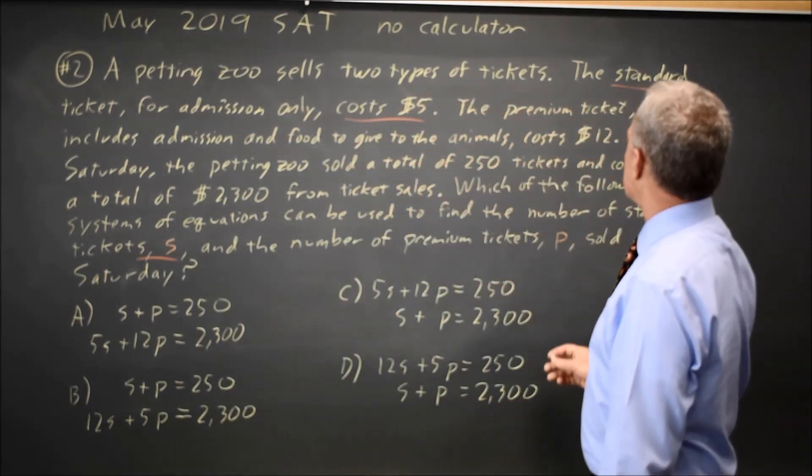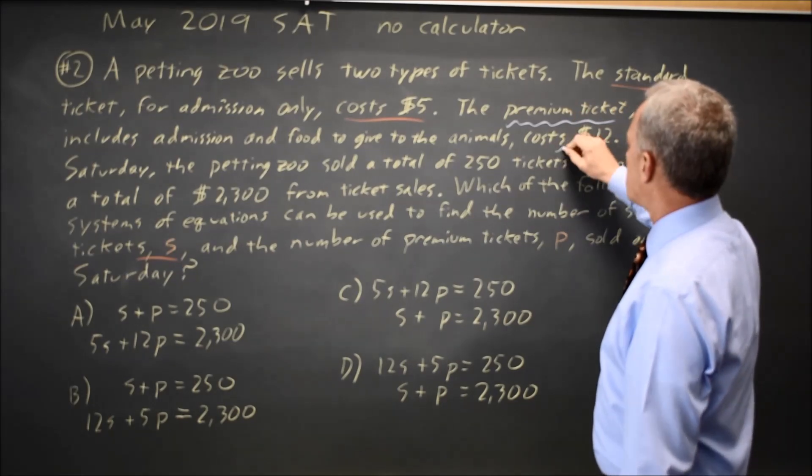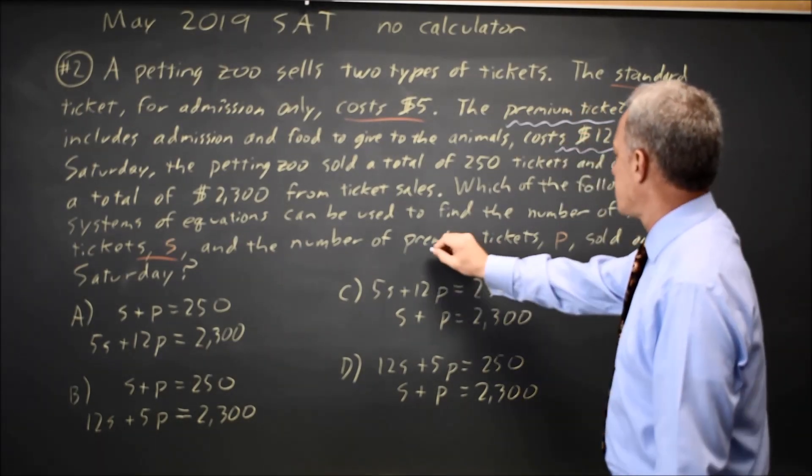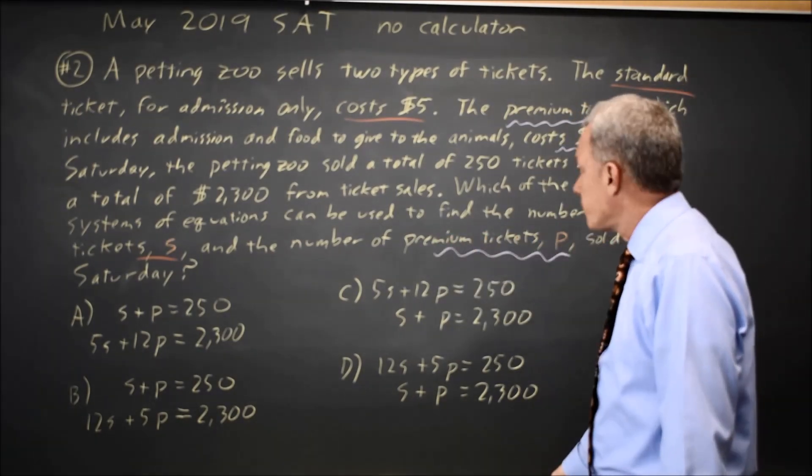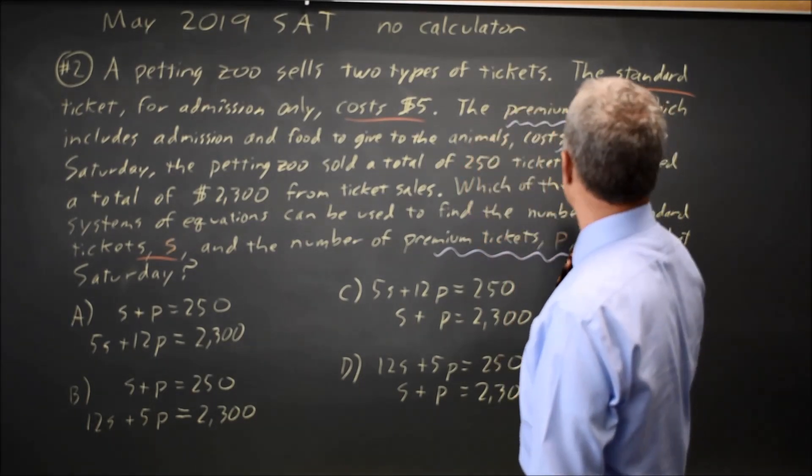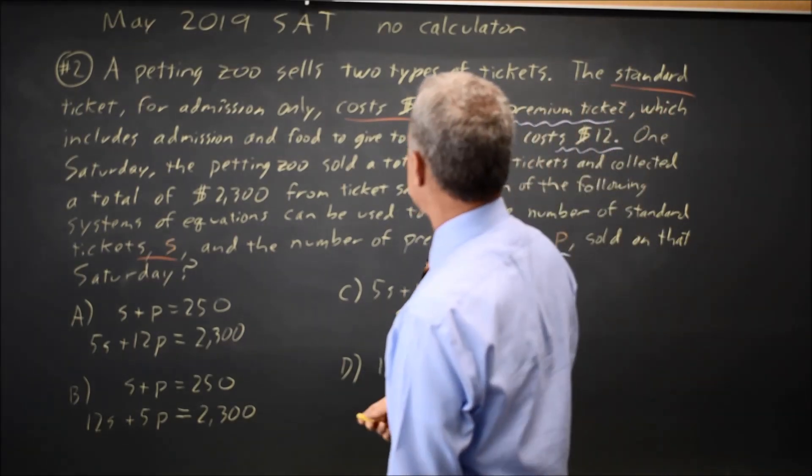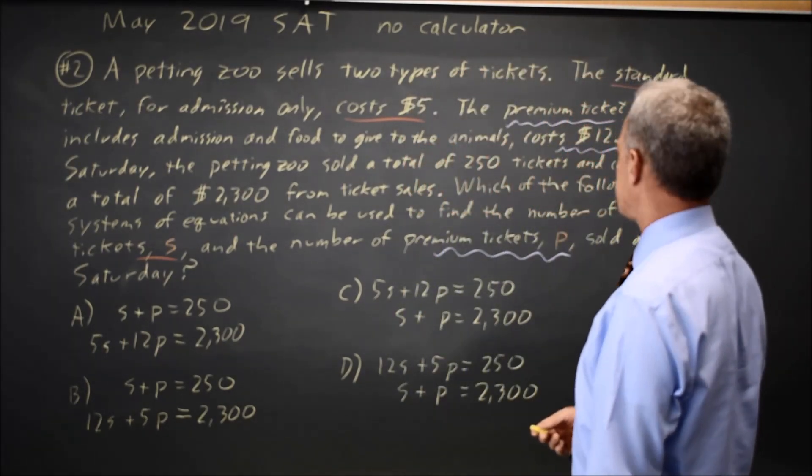And then they say that premium tickets cost $12, and the number of premium tickets is P. And finally, the total number of tickets sold is 250 tickets somewhere in here. There it is.